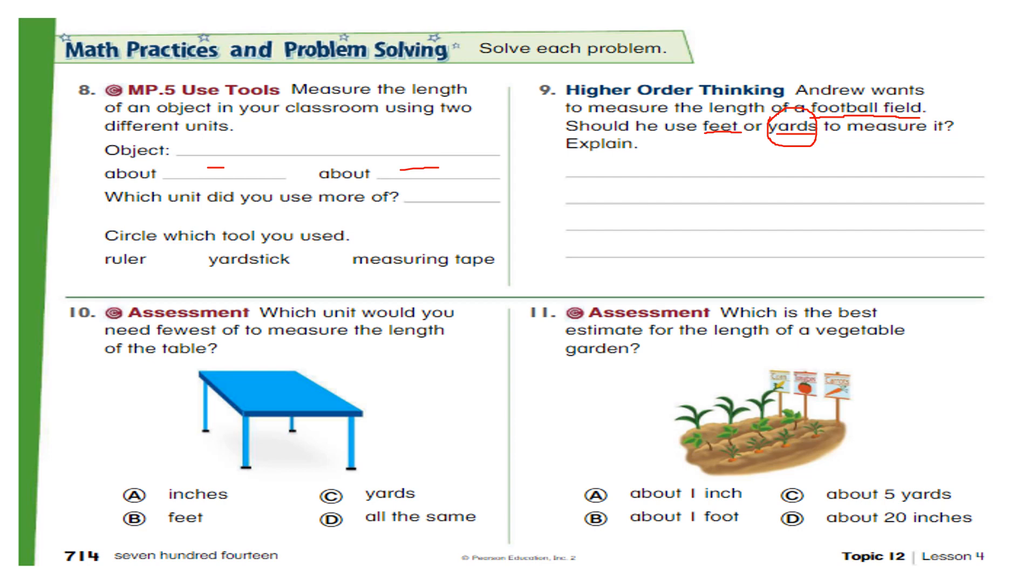Then yard. So this table, I think, is only 1 yard long. So which is the correct answer? You used many inches. You used 3 feet. And you used only 1 yard. So which one is fewest? Circle your answer.